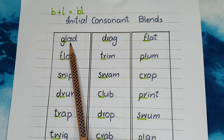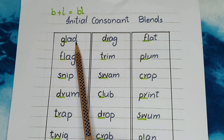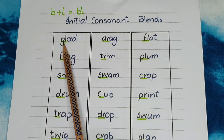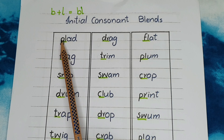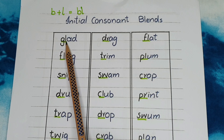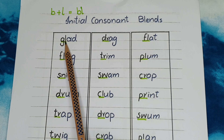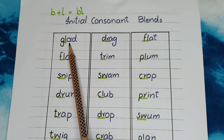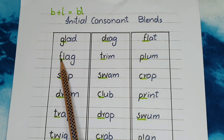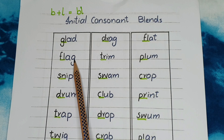Gl, a, t — glad. Whenever you see G and L together in a word, we will use gl. We will not make the sounds separately. We will use just one sound. Gl, a, t — glad. Fl, a, g — flag.